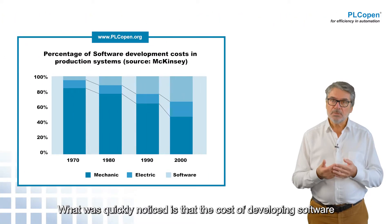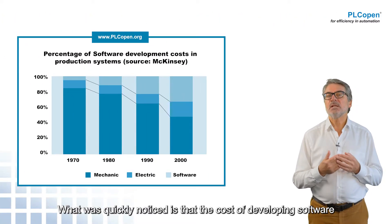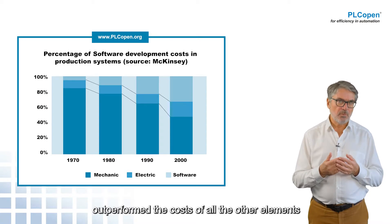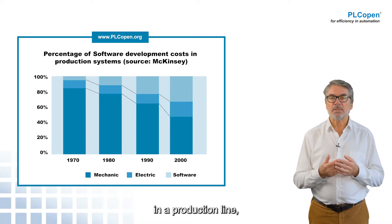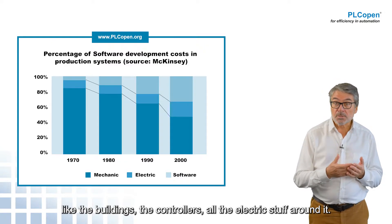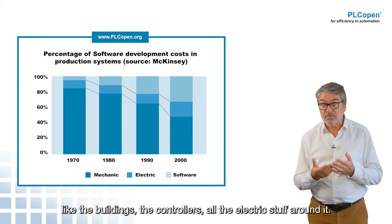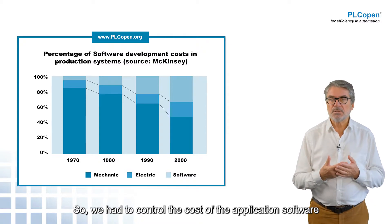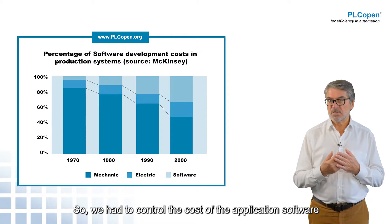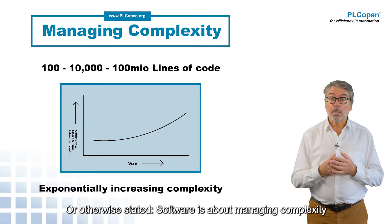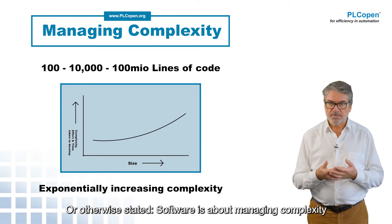What was quickly noticed is that the cost of developing software outperformed the cost of all other elements in a production line, like the buildings, the controllers, the electric stuff around it. So we had to control the cost of the application software over its lifecycle. Or otherwise stated, software is about managing complexity.